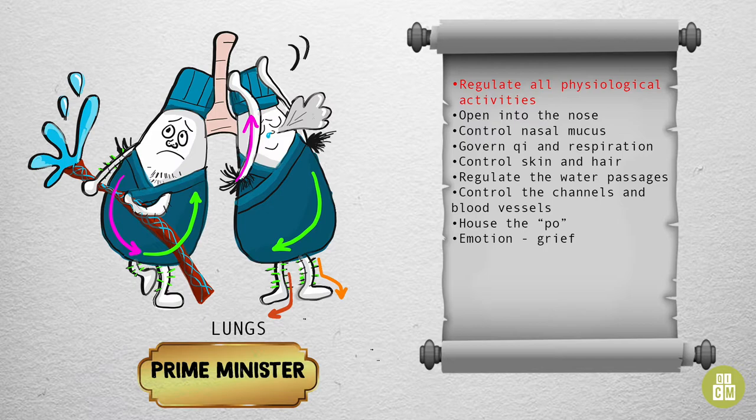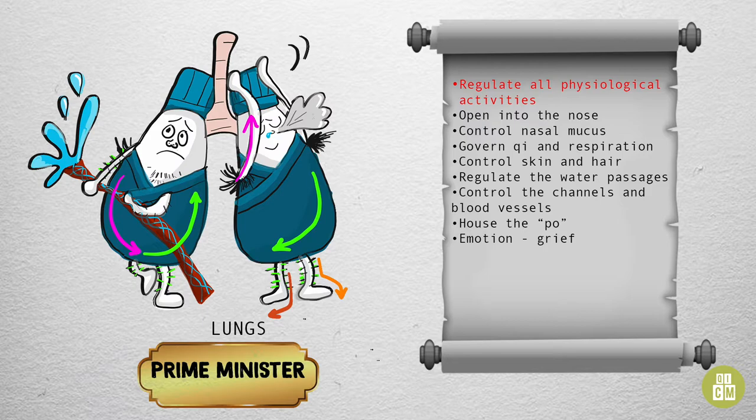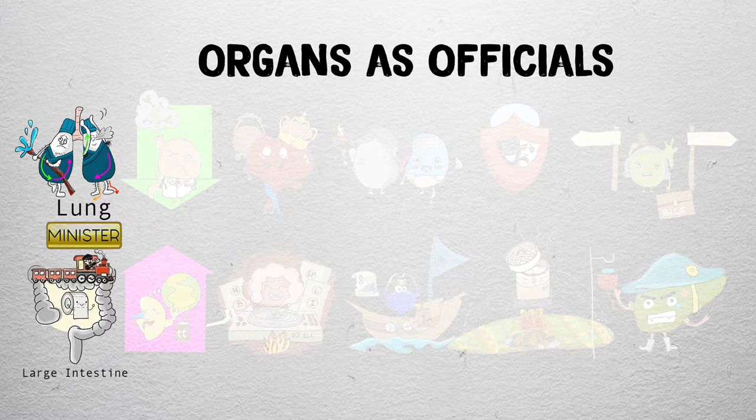You might be thinking that there's a lot to remember about the lungs — and you'd be right. The lungs are a very important organ in Chinese medicine, and knowing its attributes will be really helpful to you. Luckily, not all of the organs are so complex. The lungs' yin-yang pair, the large intestine, is where we are heading next.